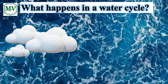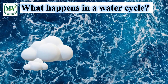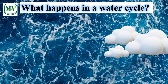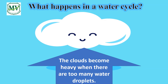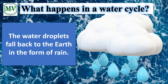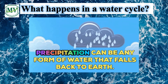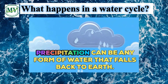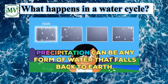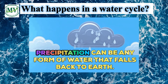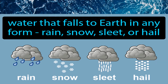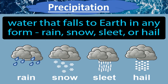These clouds begin their journey by being blown by the wind, which makes them travel from one place to another. When there are too many water droplets, the clouds become heavy. As the clouds become heavier, the water droplets fall back to the earth in the form of rain. This process is called precipitation — any form of water that falls back to the earth. It can be in the form of rain, snow, sleet, or even hail.